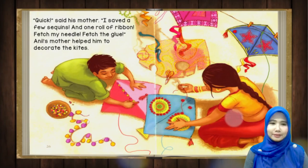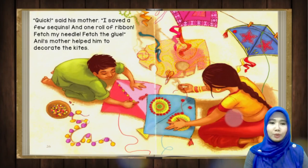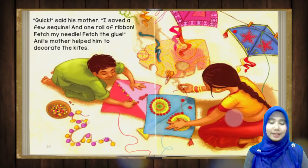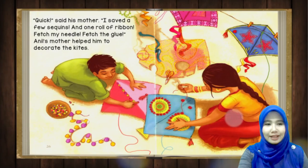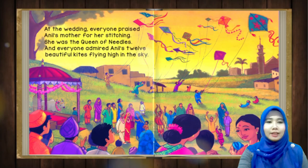Quick! said his mother. I saved a few sequins — saya simpan beberapa sequins, itu labuci tadi — and one roll of ribbon. Fetch my needles — ambil needle saya, needle tu jarum. Fetch the glue — ambil glue, what is glue? Gum. Anul's mother helped him to decorate the kites — Anul's mother pun cepat-cepat tolong dia untuk decorate ataupun menghias layang-layang tu.